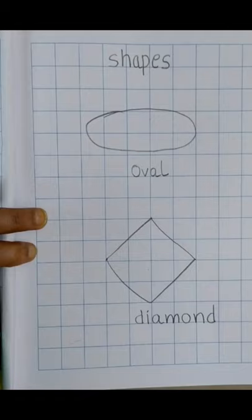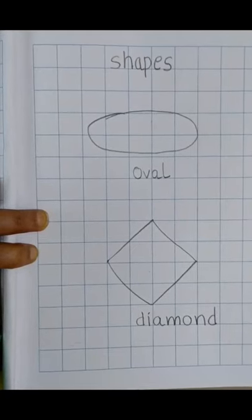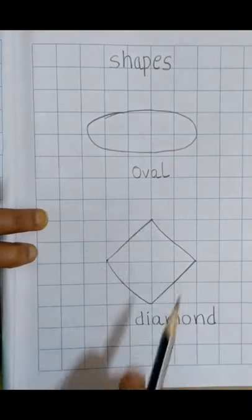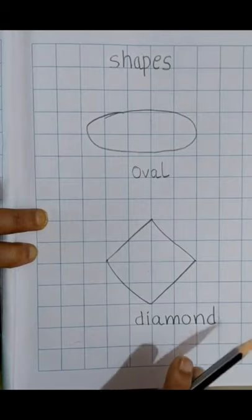Do you understand how it is supposed to be drawn? Yes, take your time. Right, so we will say once for the spelling of oval. O, V, A, L. Oval. D, I, A, M, O, N, D. Diamond.